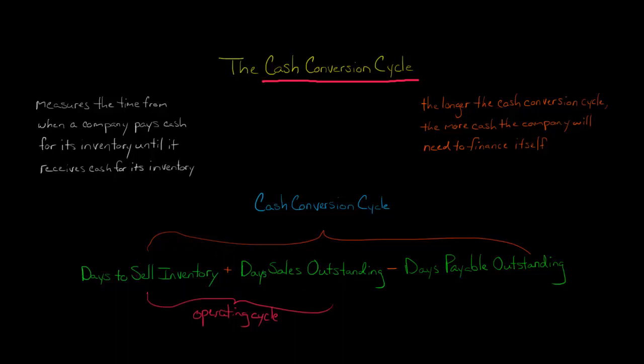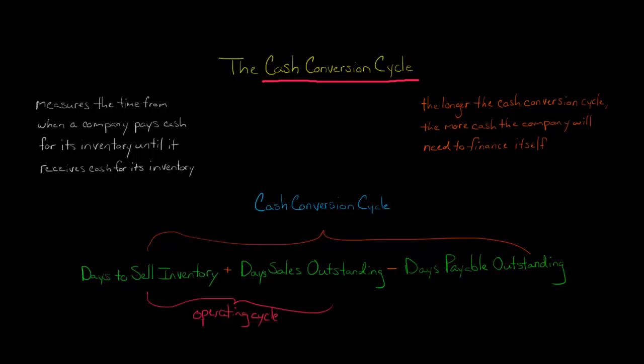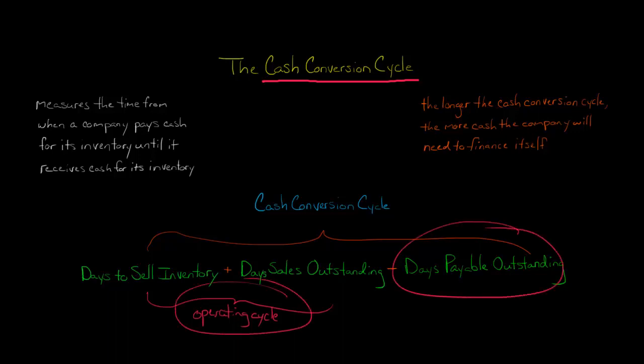Once we have the operating cycle, we then subtract the days payable outstanding — that's the number of days it takes the company to pay its suppliers for the inventory. So it's the operating cycle minus the days payable outstanding.